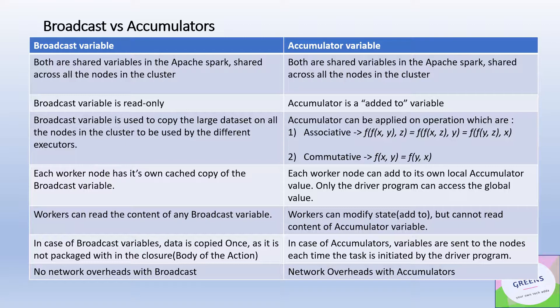Another important difference is that there is no restriction on which operations can be applied to a broadcast variable. However, in the case of an accumulator, it can only be applied in operations that are associative and commutative in nature — for example, summation is a prime example.